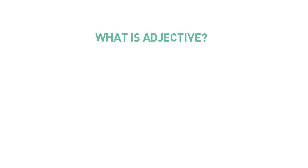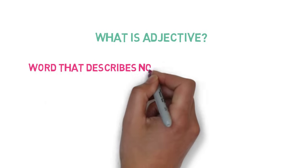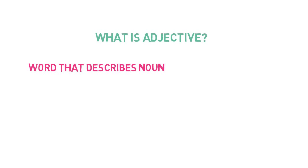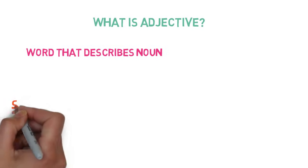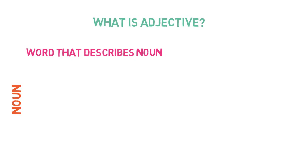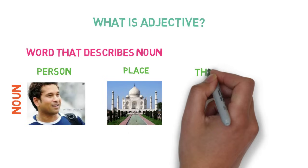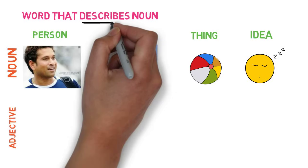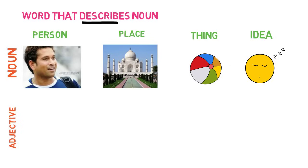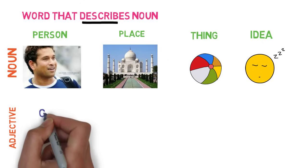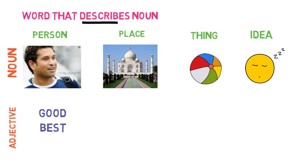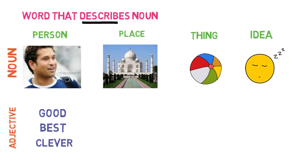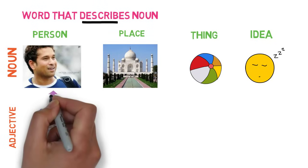What exactly are adjectives? Adjectives are words that describe nouns. To understand adjectives, we need to revise what nouns are. A noun is a word that refers to a person, place, thing, or an idea. Now, adjectives describe nouns. For example, in the case of Sachin Tendulkar — if I say Sachin is a good person, or Sachin is the best cricketer, or Sachin is a clever batsman — then good, best, and clever are the words that describe Sachin as a person.